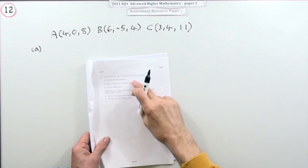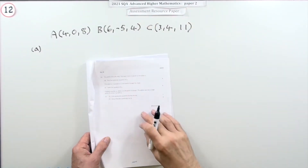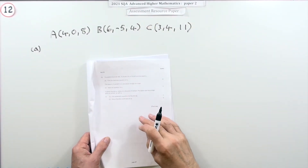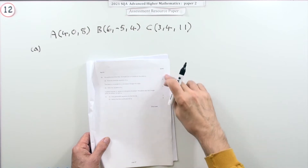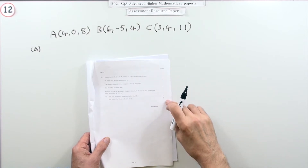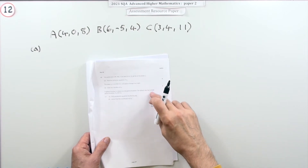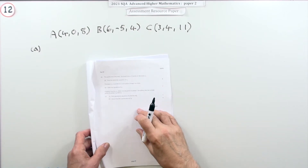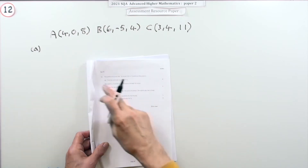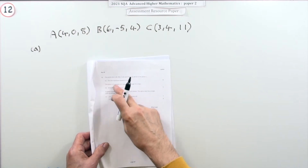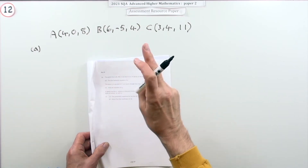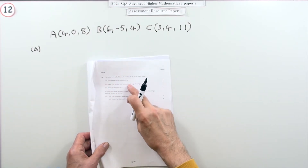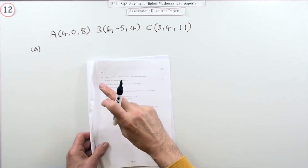Number 12 from Paper 2 of the 2021 Advanced Higher Maths — an 8-mark question on equations of lines and planes. Part a: find the Cartesian equation of a plane, called π₁, which contains three given points.